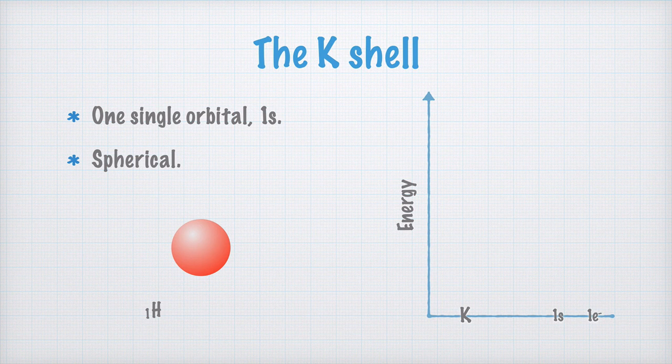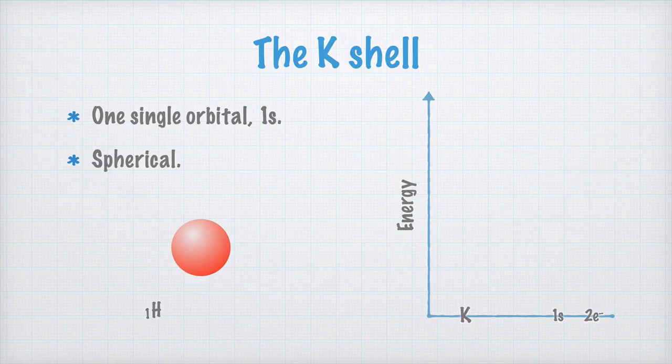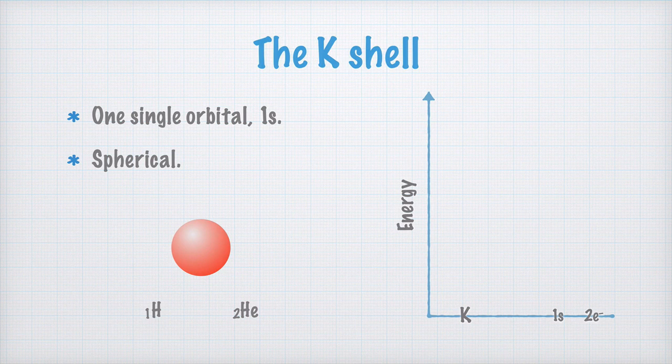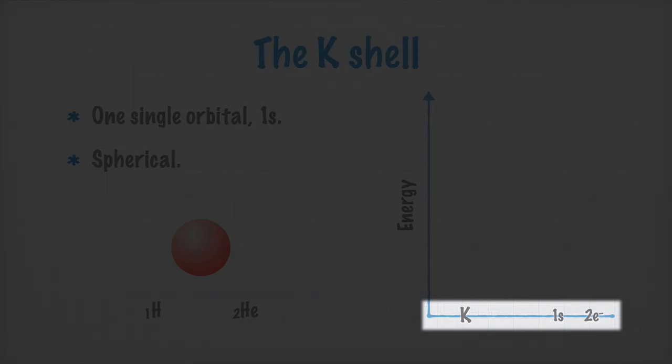As I said earlier, each orbital may contain two electrons, and so with two electrons here, it's helium we're talking about. So, in helium, which has the atomic number 2, there are two electrons in the 1s orbital in the K-shell.